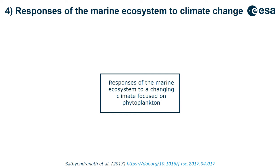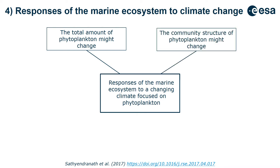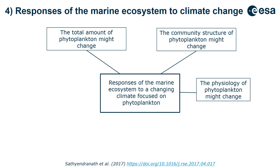Now we need to think about the responses of the marine ecosystem to a changing climate — as oceans become warmer and more acidic. Firstly, the total biomass of phytoplankton might change. It could also be that the biomass doesn't change, but the community structure does. The size of phytoplankton is very important: shifts in size could have implications for ocean carbon cycling processes like export production and sinking rate. The physiology of phytoplankton — such as photosynthetic rates — might also change.